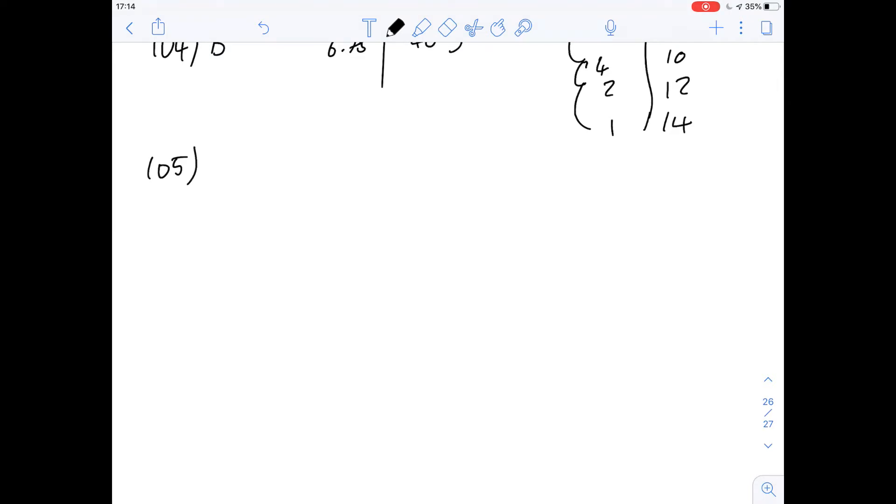And this next question is 105 and it's a bit of a strange one. It says making a few simple assumptions, which of the following is the best estimate of the rate at which your fingernails grow. This one obviously is difficult to know where to start because there's not very much information given and it's not something I'm sure we've looked at before.